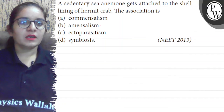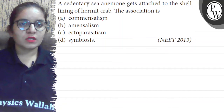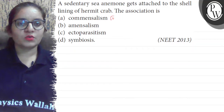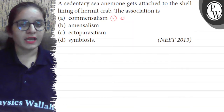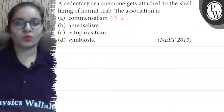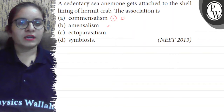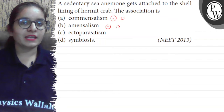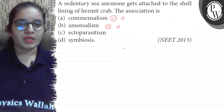First of all, let's look at the options. Commensalism means when two different species are living together and one is getting benefit and another is neutral — neither benefited nor harmed. Amensalism is when it is a population interaction in which one species is getting harmed and another is neutral — neither benefited nor harmed.